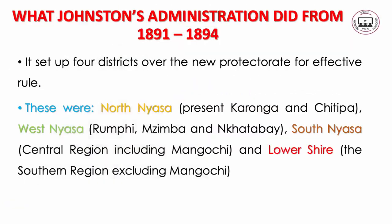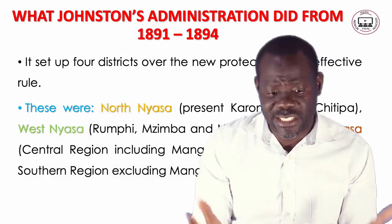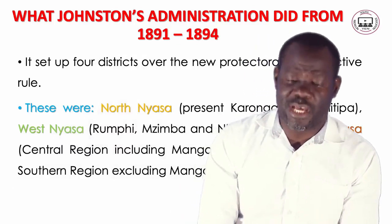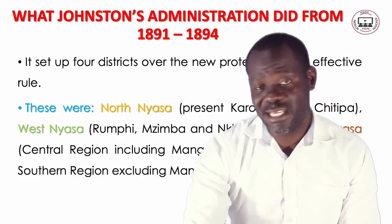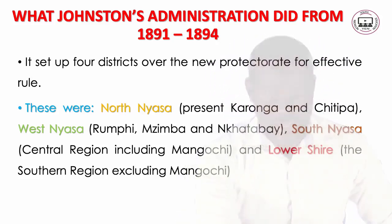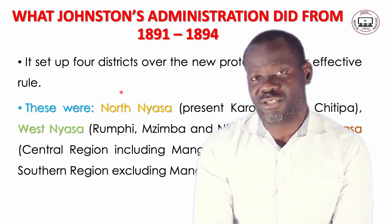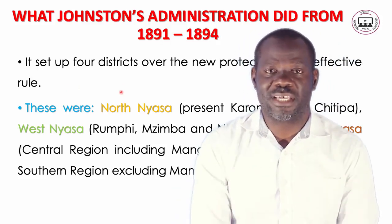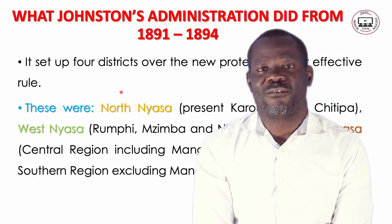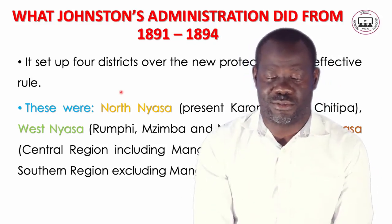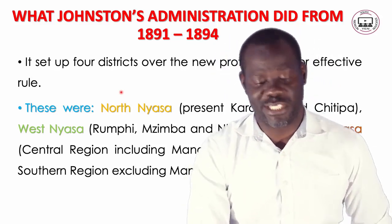Now, what was the Johnson administration? What did Johnson do from 1891 to 1964? Number one, his administration set up four districts over the new protectorate for effective rule. When Malawi was declared a protectorate, the first thing that Johnson did was to divide Malawi into four districts for effective administration.